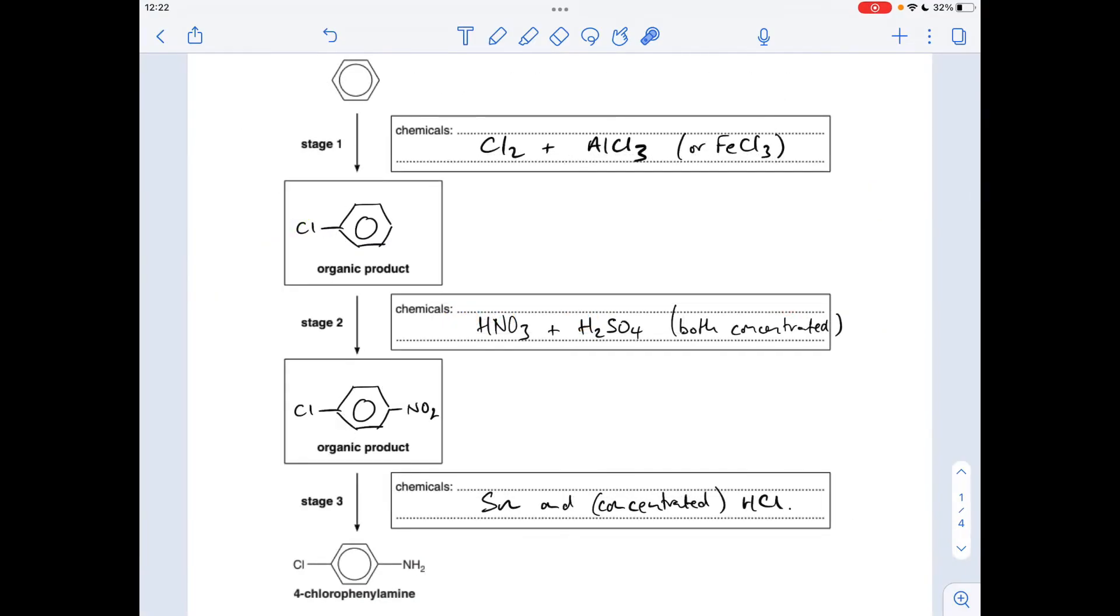So we'll just run through the stages now. So I've gone for chlorine on first. So you'd react benzene with chlorine and either an AlCl3 catalyst or FeCl3. That's going to substitute the hydrogen for a chlorine there. And then we can put the nitro group on. Remember that's going to go to position 4. You'll actually get some 2 as well.